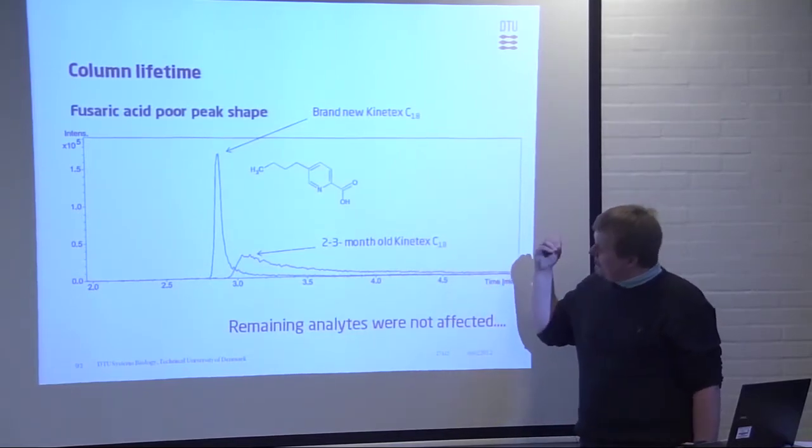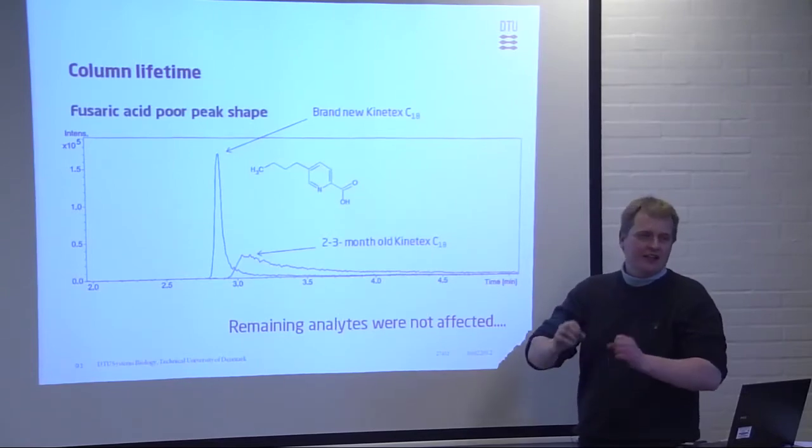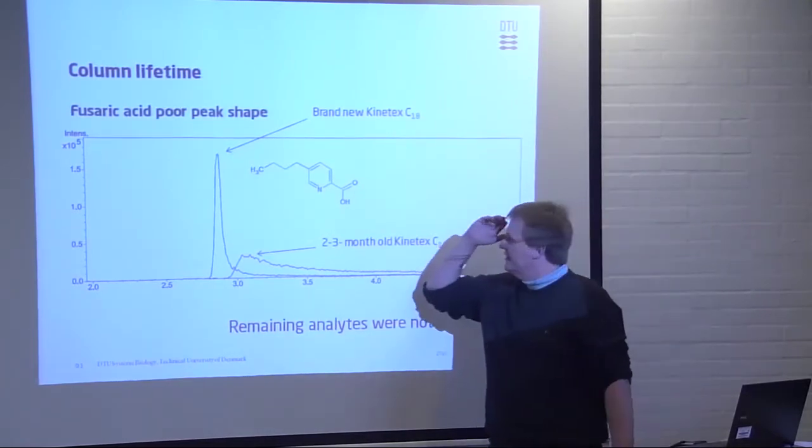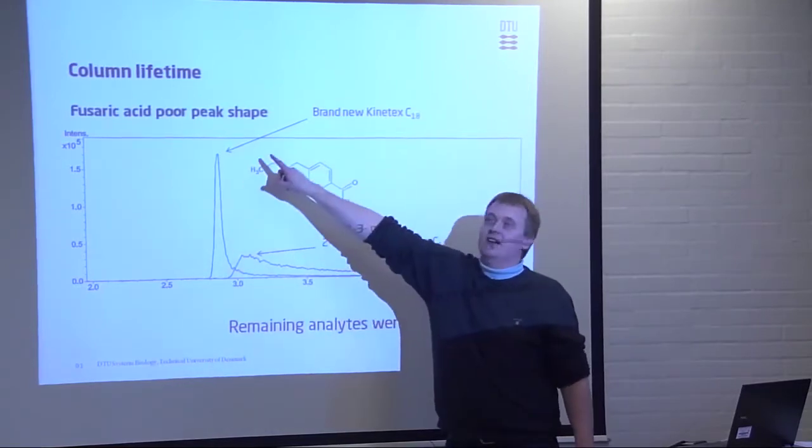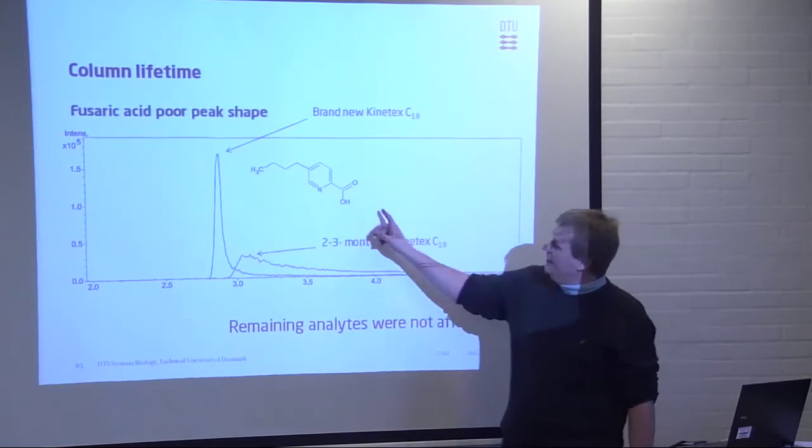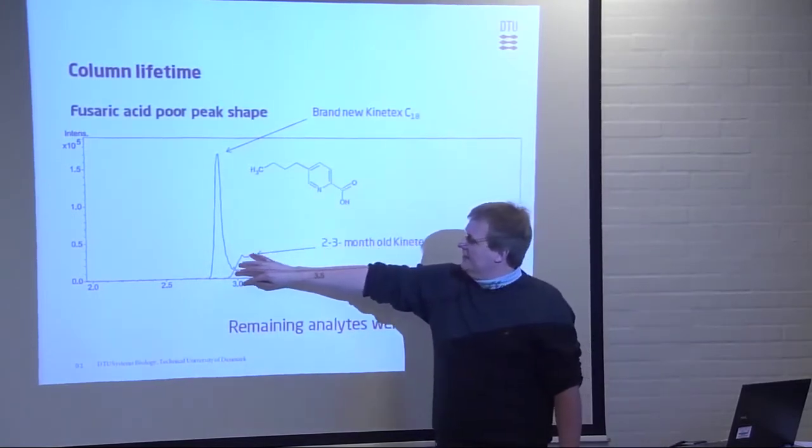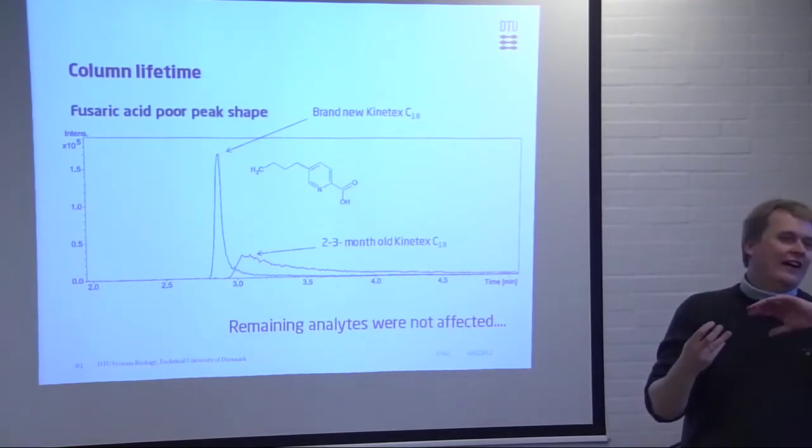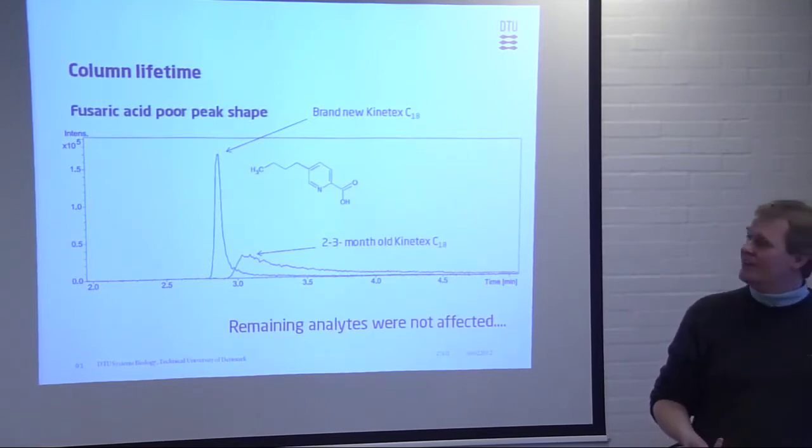We took the same brand of column. It was the same batch, everything, new one, into the system, two blank runs, and zipped this one through, and now we get a nice peak. So what happens here is probably some kind of ion exchange, and that there are some crap sitting inside the column, and our analyte is sticking to that. That's why we also have to change the column.